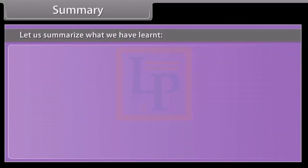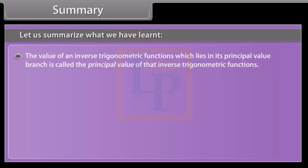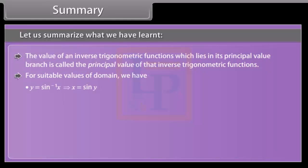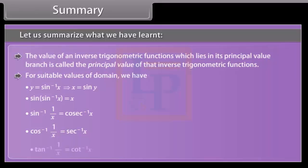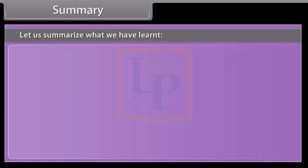Let us summarize what we have learnt. The value of an inverse trigonometric function which lies in its principal value branch is called the principal value of that inverse trigonometric function. For suitable values of domain, we have the formulas discussed in this lesson.